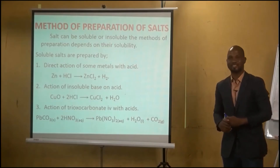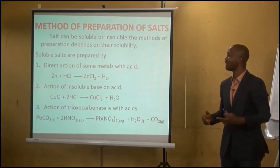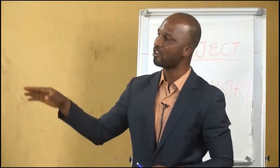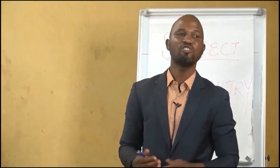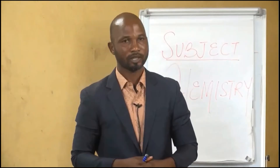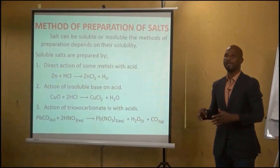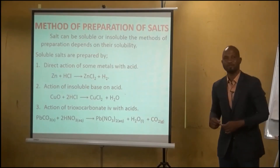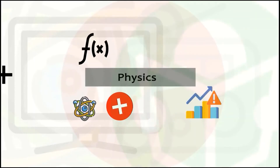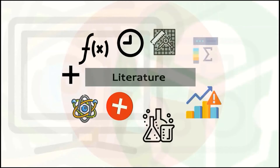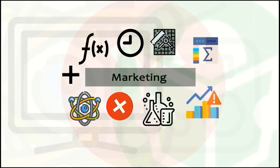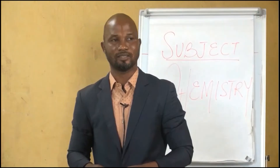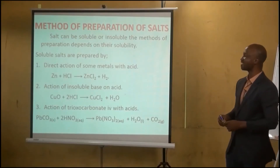By 'some metals,' we mean metals above hydrogen on the electrochemical series. Metals like copper, platinum, mercury, silver, and gold cannot displace hydrogen in acid. Another method is the action of an insoluble base on acid. For example, copper oxide reacting with hydrochloric acid gives copper chloride plus water.